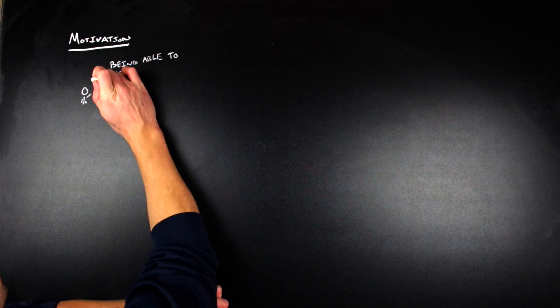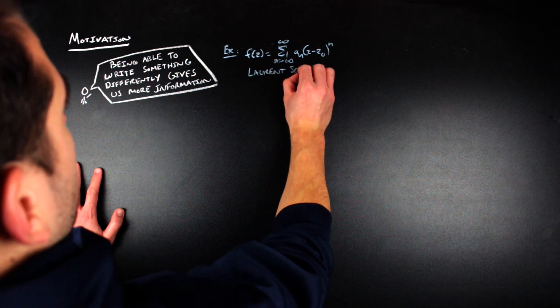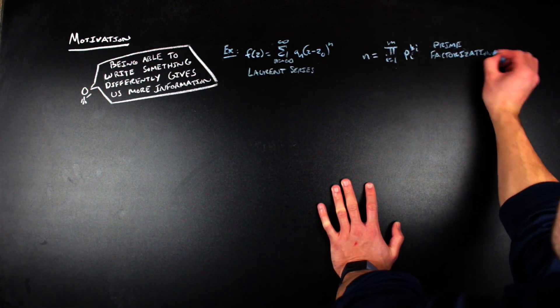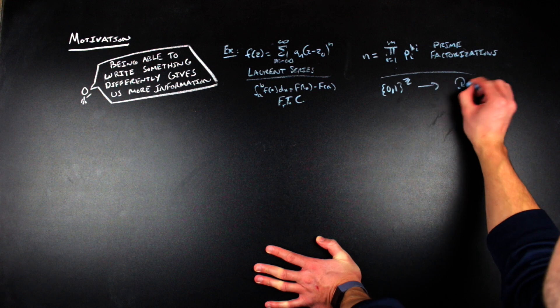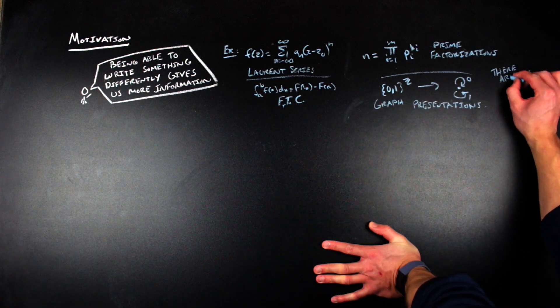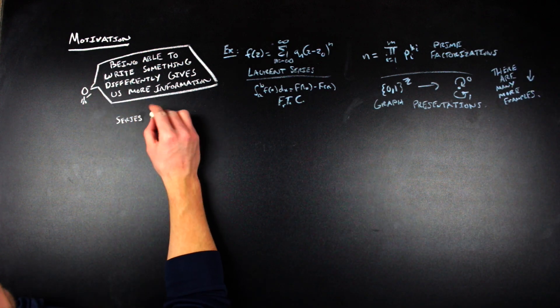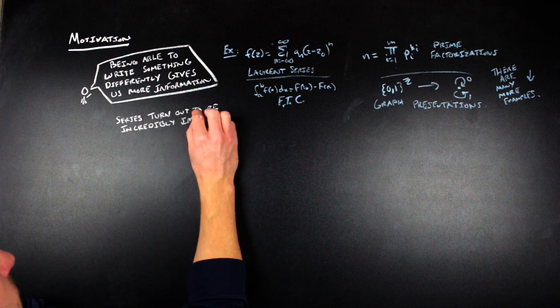As some motivation, one of the things that we care about in mathematics is understanding the structure of different mathematical objects, and one of the bigger tools for doing that is figuring out how to express different objects in different ways. This can be done across the board from elementary mathematics to higher math, where we take certain numbers or computations or structures and express them as other numbers, computations, or structures.